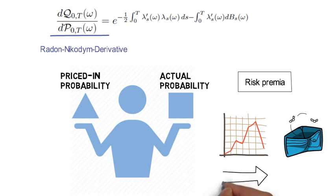These painful states are overweighted in the pricing function relative to their actual probability of occurring. But that overweighting is rational and not the result of a behavioral bias, because risk-averse yet rational investors demand a risk premium for risk that they cannot diversify.